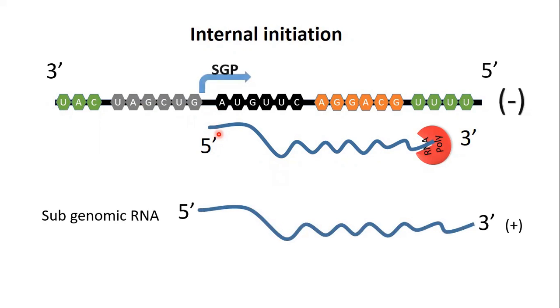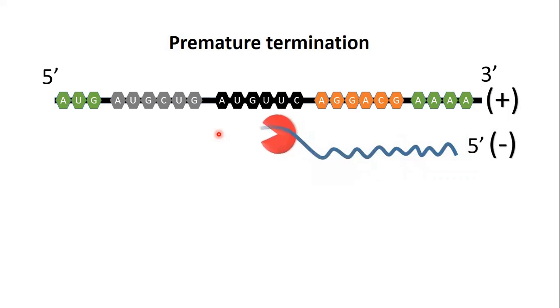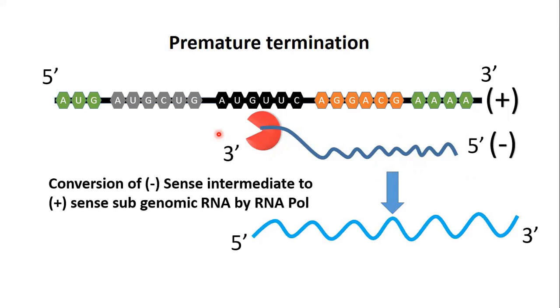This subgenomic RNA is plus sense RNA and undergoes further translation using the host ribosome. Another method is premature termination. Premature termination involves the plus sense RNA of a plus sense RNA virus genome. The RNA polymerase starts replication from the five prime region, and then transcription stops in the three prime region and the middle side of the genome. As a result, a partial fragment is created which is negative sense. This negative sense is then converted into a positive sense subgenomic RNA, which undergoes translation using the host cellular machinery.